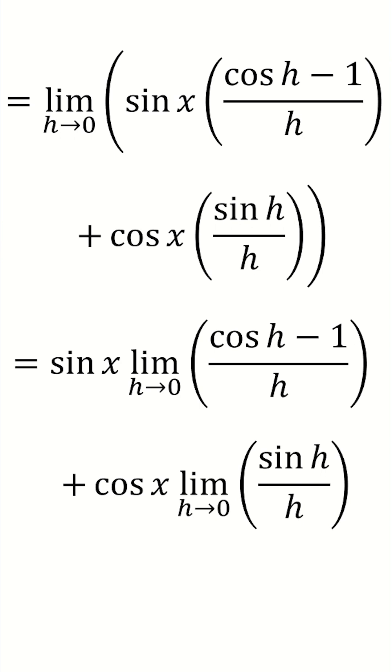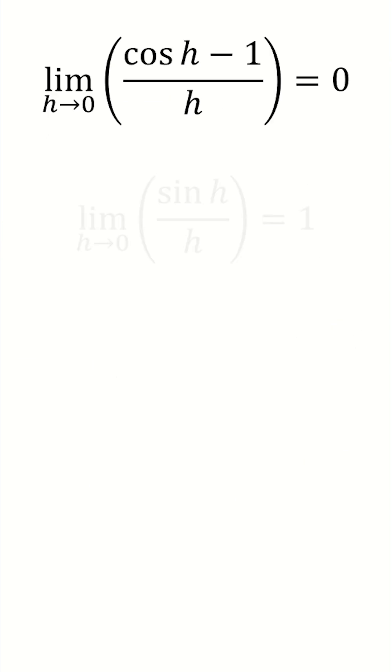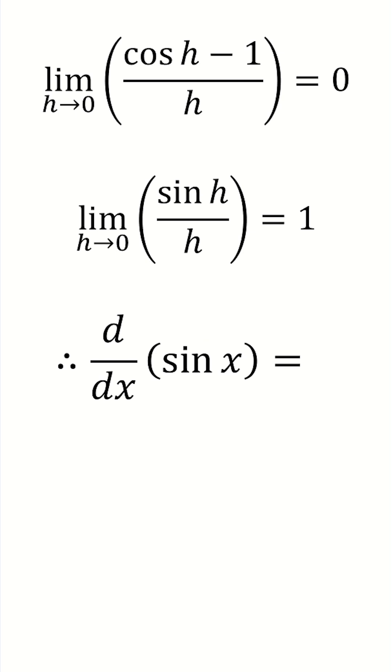But then, if you're studying maths A-level, it's your lucky day, because the question will usually quote this fact and this fact for you, meaning you can just plug them into the result we just derived, meaning we get that the derivative of sine of x is equal to zero lots of sine x plus one lot of cos x, which, what do you know, is cos of x.